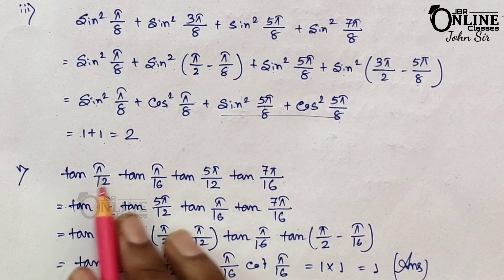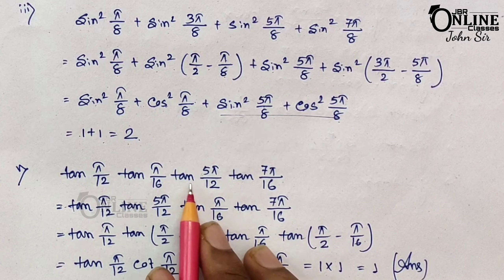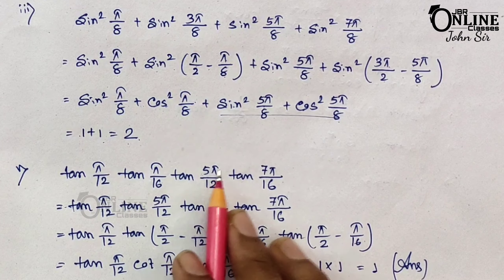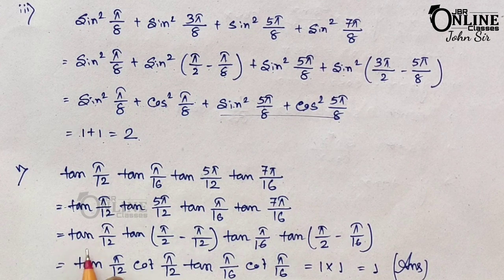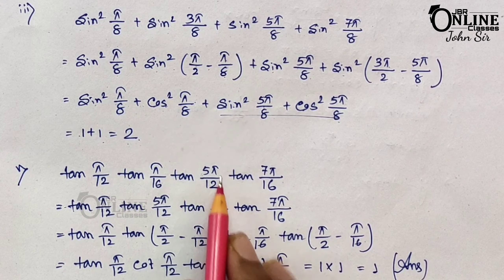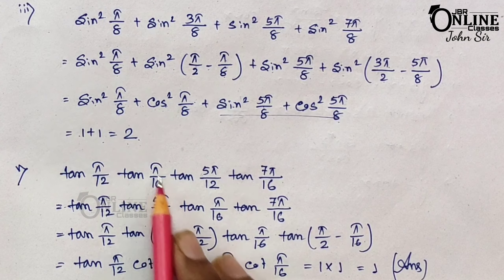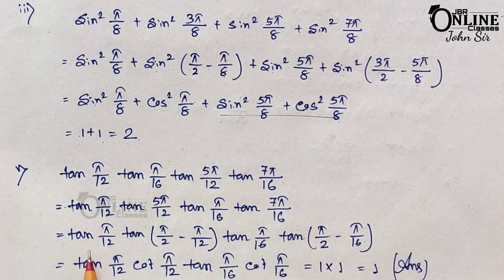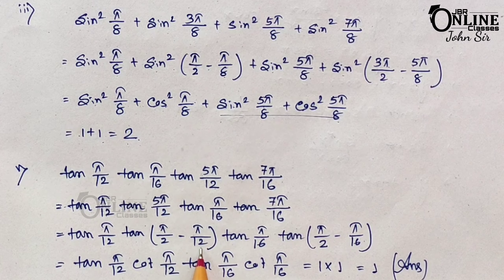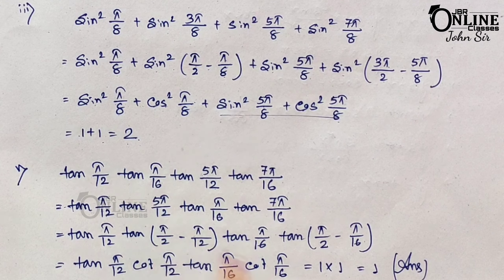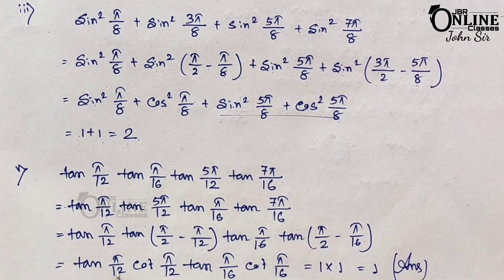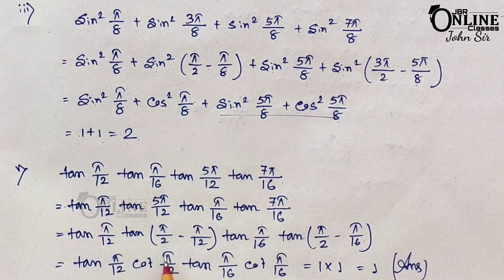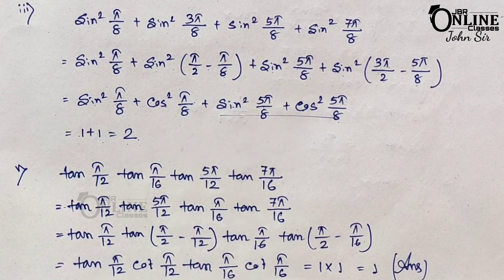Problem 10.5: Find tan(π/12)·tan(5π/12)·tan(π/16)·tan(7π/16). Note that 5π/12 = π/2 − π/12, so tan(5π/12) = cot(π/12); they are reciprocals and cancel. Similarly 7π/16 = π/2 − π/16, so tan(7π/16) = cot(π/16); these also cancel. Therefore the product equals 1·1 = 1.